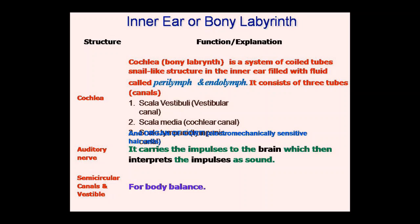The cochlea is what we call the bony labyrinth — a system made of coiled tubes, like a snail-like structure. This whole coiled tube system is within the inner ear, filled with two types of fluid: perilymph and endolymph. The cochlea contains three tubes or canals: the first is the scala vestibuli, which we call the vestibular canal; and the second is the scala media, which we call the cochlear canal.